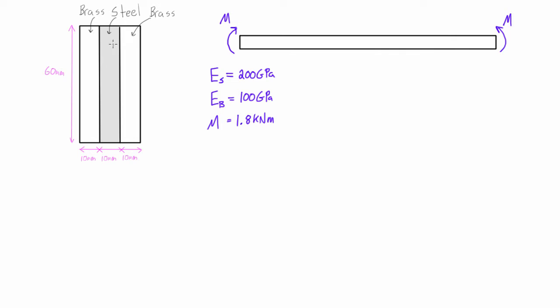And this is the cross-section where we see that it's actually not a homogeneous material. It looks like a plate of brass, then steel, then brass, and these are somehow bonded to each other. But the important thing here is that steel and brass have different modulus of elasticity. Steel is 200 gigapascals and brass is 100 gigapascals.